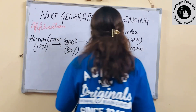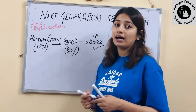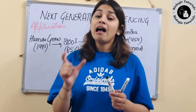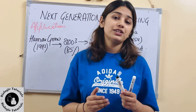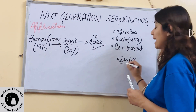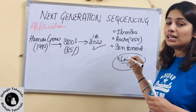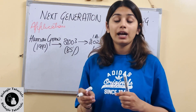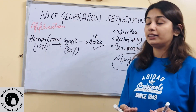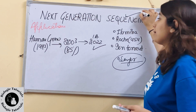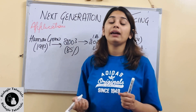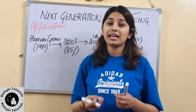Toh hum kehna kya chahte hain ki purane time mein humare paas advanced DNA sequencing aur RNA sequencing ki itni advanced technologies nahi thi. Wohan pe humare paas usually Sanger sequencing use hoti thi. Ye jo Sanger sequencing thi, ye costly bhi thi aur time bhi bahut zyada consume karti thi. Toh isliye humein ek advanced sequencing chahiye thi. Aaj ke time pe jo sequencing hai, that is next generation sequencing — aaj hum ek din mein hi poore genome ki sequencing kar sakte hain.